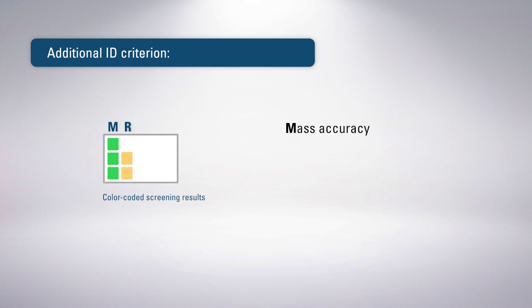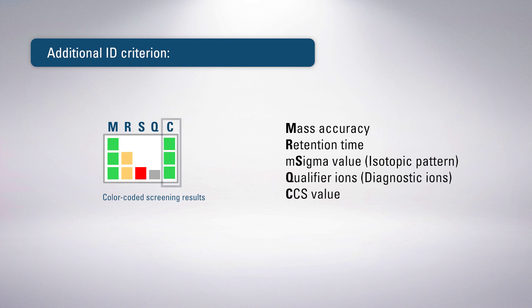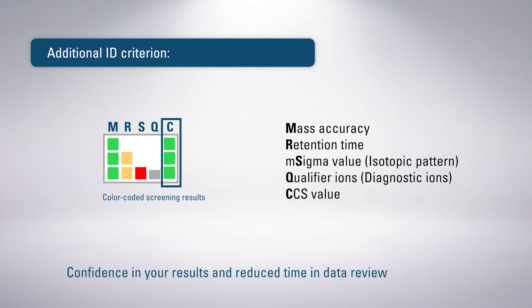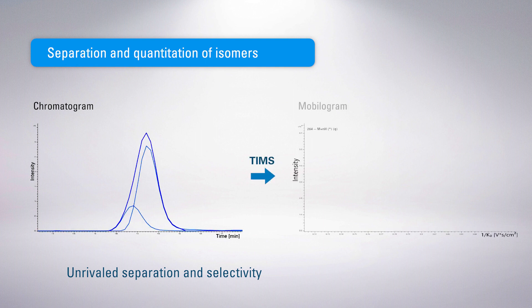Improve the certainty of analysis through the additional CCS ID criterion. Color-coded screening results provide swift qualitative and quantitative results at a glance. Unleashing accurate quantitation, TIMS separation resolves isobaric and isomeric compound uncertainties.